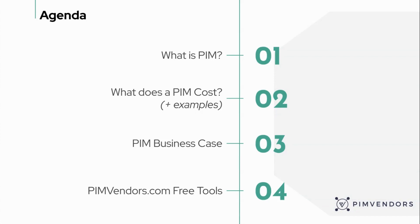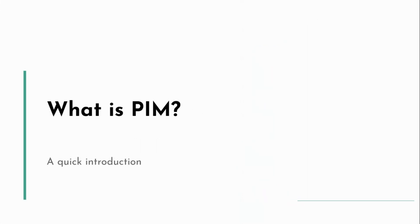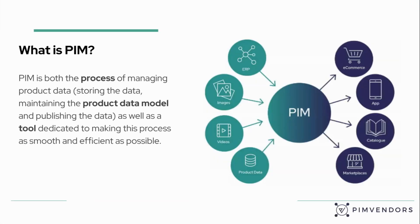We'll quickly dive into what is PIM as an introduction, we'll look at PIM cost drivers, we'll look at examples, look at the PIM business case, and we'll look at the PIMVendors.com free tools to wrap up. So first, what is PIM? How do we define PIM? PIM, or product information management, is the process and the tooling that we use to make the process of product information management as smooth and efficient as possible.